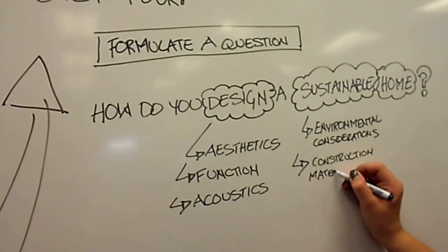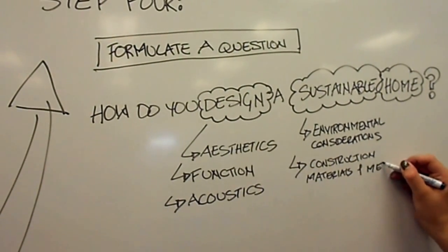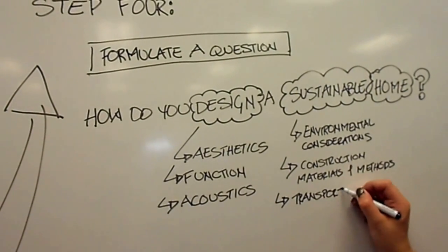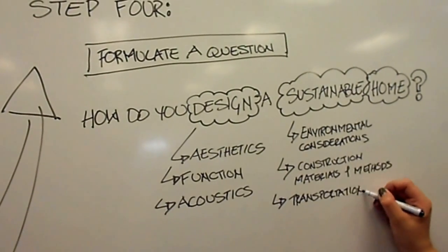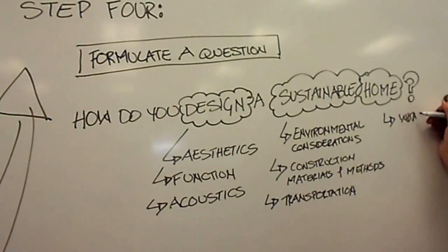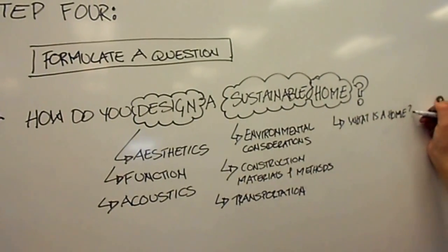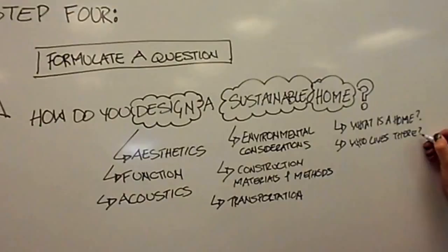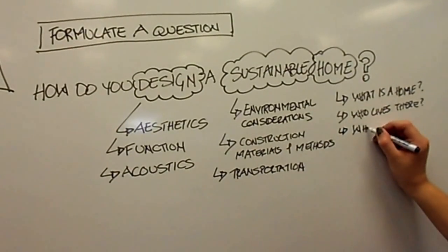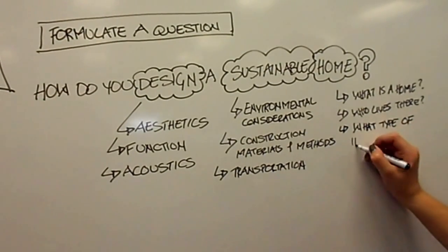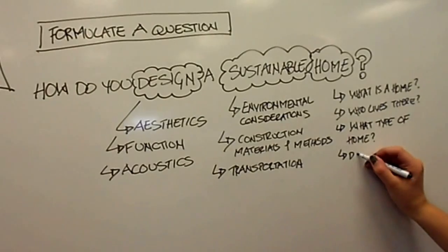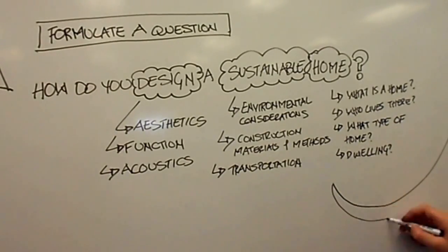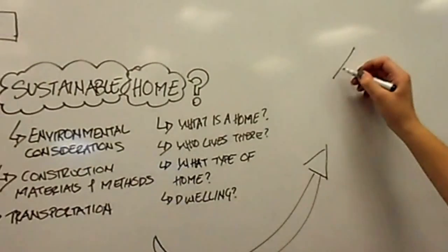This can be done by breaking down the key terms and concepts of the question. What do we mean by design? What do we mean by sustainable? And what do we mean by home? Are we looking at a particular type of home? Are we considering it a dwelling? By breaking down these terms, this will help make the question one that we can actually answer by making it more specific.